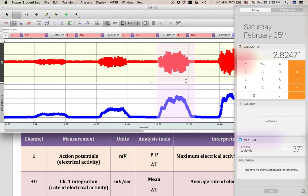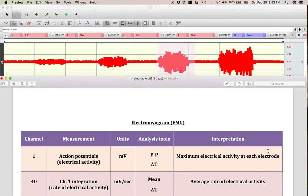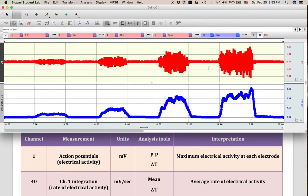What this tells us is the highest electrical activity found at each electrode, E1 and E2.